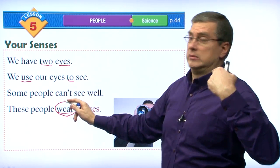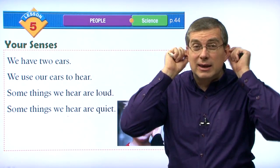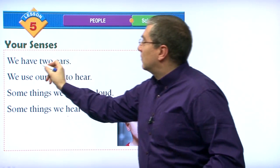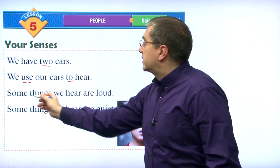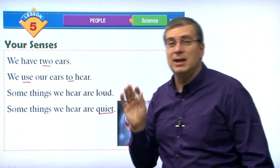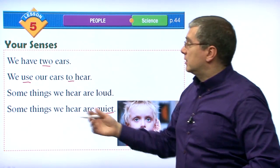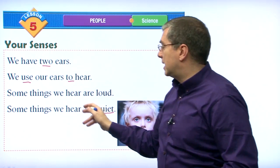Now let's talk about ears. We have two ears. We use our ears to hear. Some things we hear are loud. Some things we hear are quiet or soft. It's hard to hear quiet things.